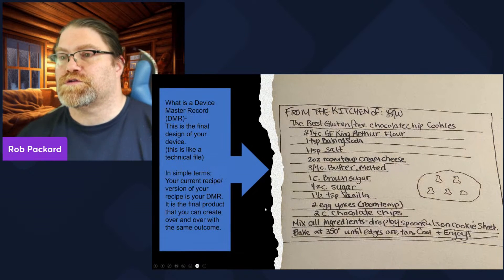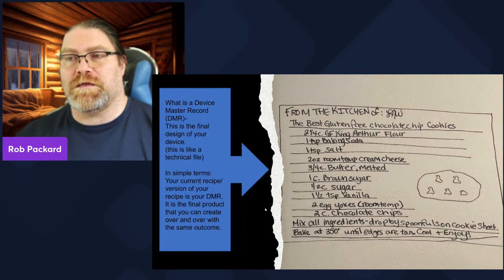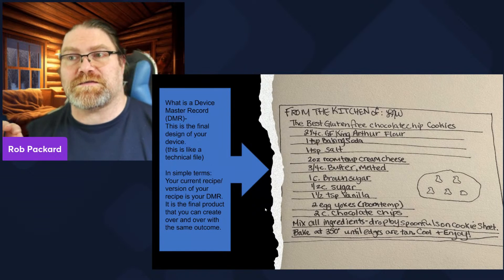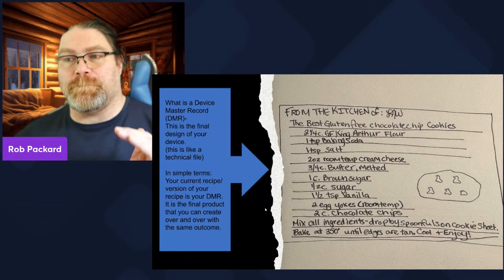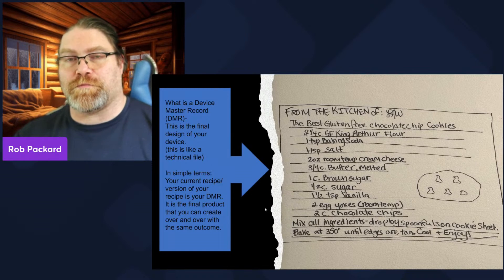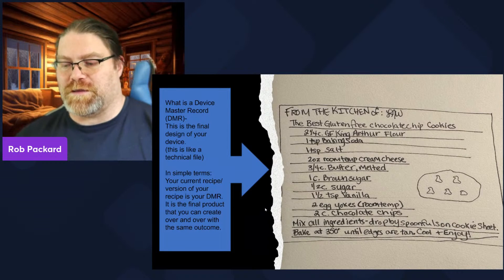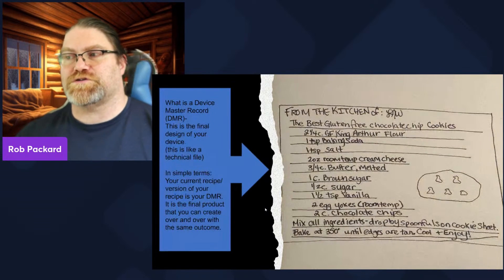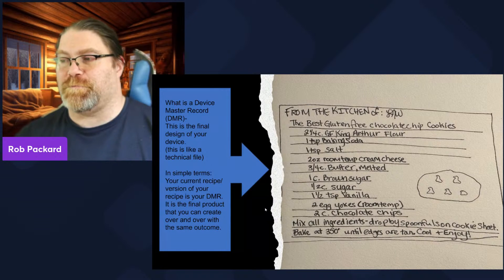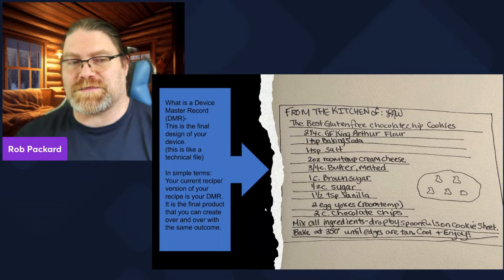Next is the DMR — a device master record. Not a design history record, not a design master record — it's a device master record. This is how to make the device. This is your recipe. So this is Lindsay's final version of her best gluten-free chocolate chip cookies. This is the best one — it has a name. This is the current recipe: how we make it the same way every single time.